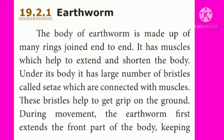The earthworm. The body of the earthworm is made up of many rings joined end to end. It has muscles which help to extend and shorten the body. Under its body, it has a large number of bristles called setae, which are connected with muscles. These bristles help to get a grip on the ground.